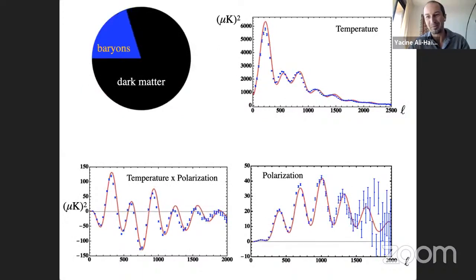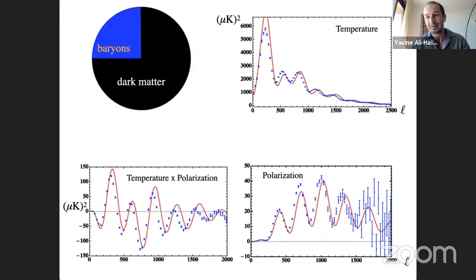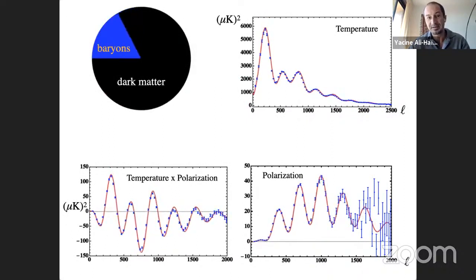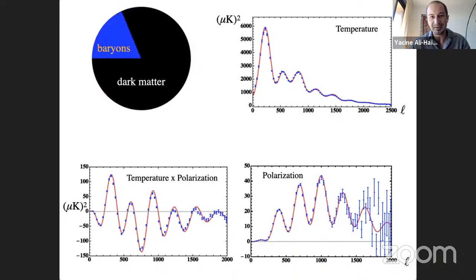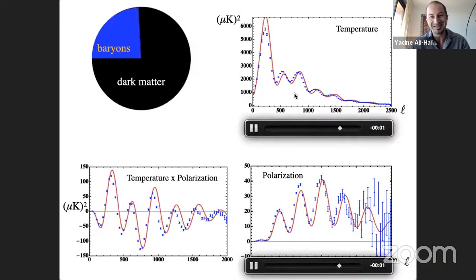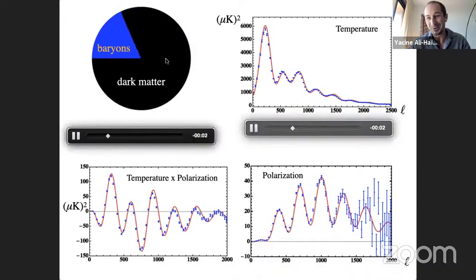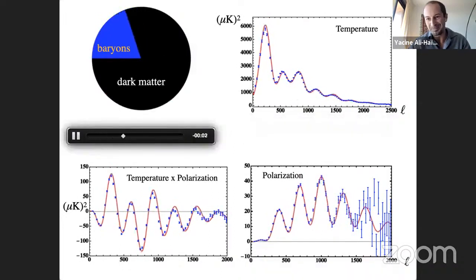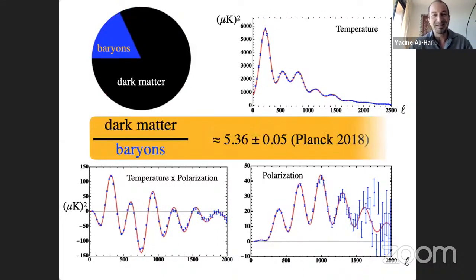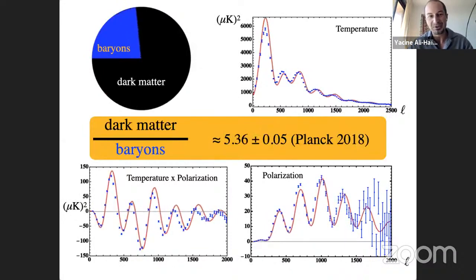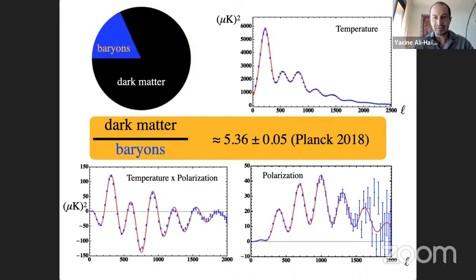Dark matter manifests itself across a very broad range of systems and scales, but by far the most accurate and precise measurement we have of its abundance is from CMB anisotropy temperature and polarization power spectra. If you try to fit the Planck data by reducing dark matter to zero, you cannot even run the code — you need about five times as much dark matter as baryons, measured to percent precision.